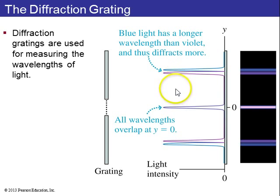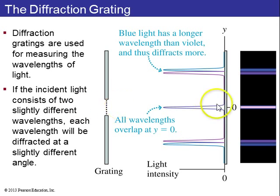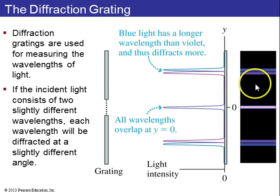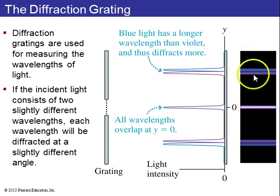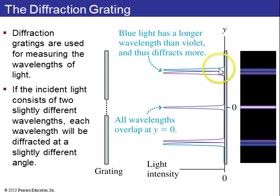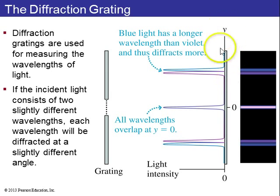Diffraction gratings can be used, instead of a prism, to spread light out into its different wavelengths. With a diffraction grating, all wavelengths overlap at the zeroth order since the path length is always the same there, giving white light. But at the first order on either side, you get a little rainbow, because bluer light has a longer wavelength than violet light, so it ends up at a higher value of theta — a different position. The same occurs at all higher orders.